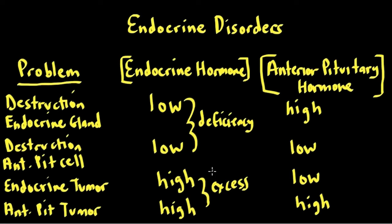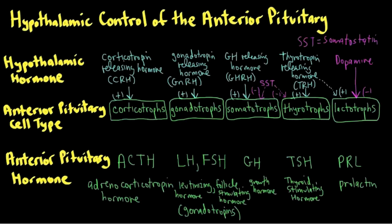This diagnostic approach is used all the time. If a patient presents with low thyroid hormone, we don't know if it's a problem with the thyroid gland itself or with the anterior pituitary thyrotroph. By measuring TSH, we can figure it out: if TSH is high, the problem is with the thyroid gland; if TSH is low, the problem is with the anterior pituitary thyrotroph output. Knowing all the hormone cell types in the anterior pituitary, their hormone names, and their targets allows you to work through these problems.